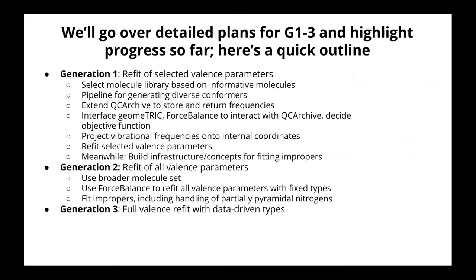We're going to go over the detailed plans. Generation one is refitting selected valence parameters: select the molecule library with particularly informative molecules, then do conformer generation. There's some work we need to do on QC Archive to get it to interface with this, and on geometric and ForceBalance. We also want to project vibrational frequencies onto internal coordinates to help with some of this. We're also building infrastructure and concepts for fitting impropers — we're going to make a broader use of improper torsions than most force fields have in the past. Generation three will refit with chemical perception that is data-driven.